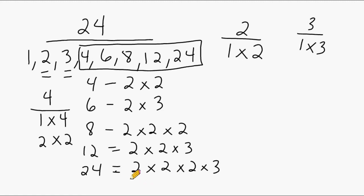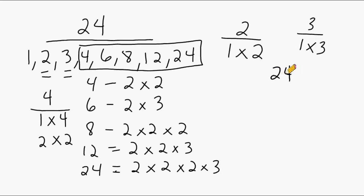So we would call this the prime factorization of 24. And we can also come up with this prime factorization by doing a factor tree. What we do is we just write the number in question, which in this case is 24. And we draw this little upside-down V here because we are branching out or breaking this number down into factors that produce 24.